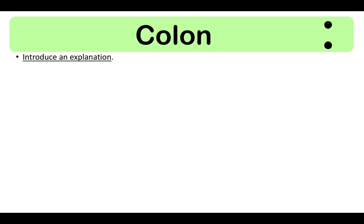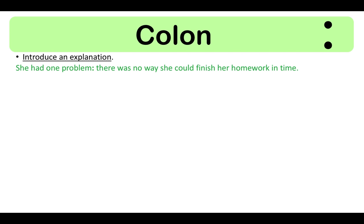An example of a colon used to introduce an explanation is: 'She had one problem: there was no way she could finish her homework in time.' In this sentence, the general idea is given, followed by the colon, and then the specific explanation is given.